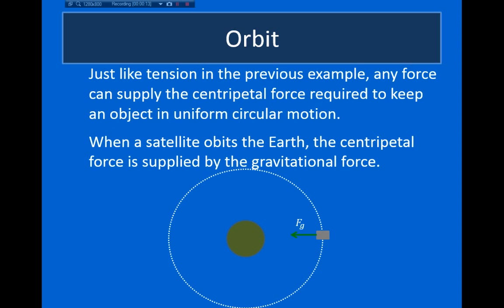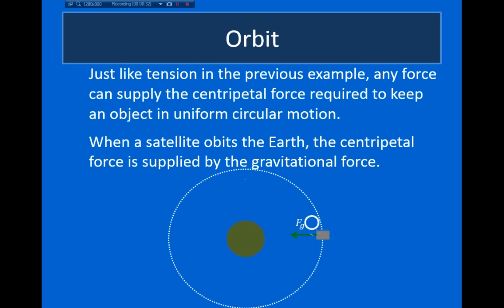The first example I want to look at is an object traveling in a circular orbit around a planet. When an object is in a circular orbit, the speed it is moving at is always the same, so this motion will be uniform circular motion. Additionally, if we look at this free body diagram, we can see that the only force exerted on a satellite orbiting a planet is the gravitational force.